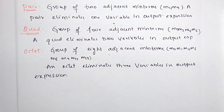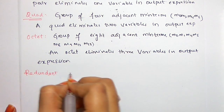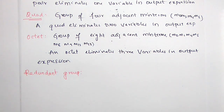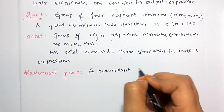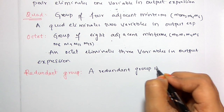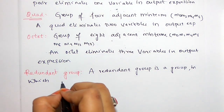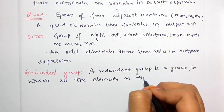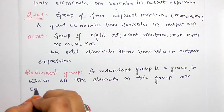The next term is redundant group. A redundant group is a group in which all the elements in this group are covered by some other groups.